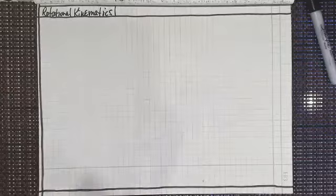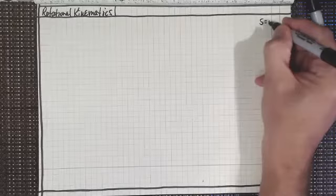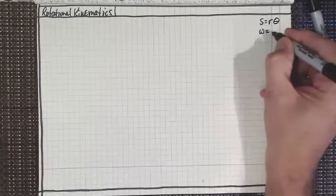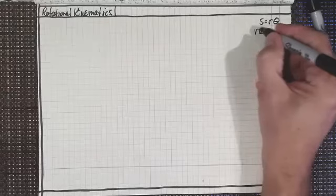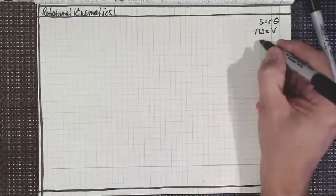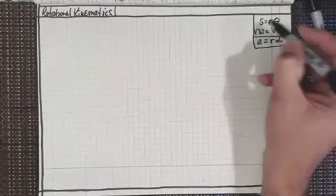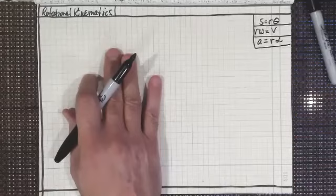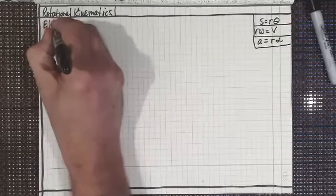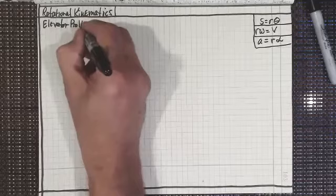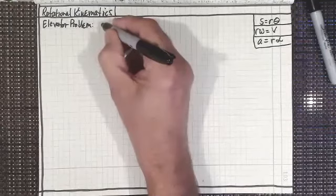So the first thing I want to do is that problem that I mentioned. So this is rotational kinematics. And you remember all of our various things here that s equals r theta, r omega equals v, and acceleration equals r times alpha. So those are three equations that we have for rotational kinematics. And what we want to do is look at this elevator problem. And there's two parts to this elevator problem.